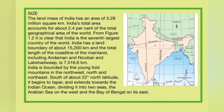South of about 22° North latitude, India begins to taper and extends towards the Indian Ocean, dividing it into two seas — the Arabian Sea on the west and the Bay of Bengal on the east. Looking at the map, the Tropic of Cancer is at 23.5° North, and just below at 22° North, India becomes narrower and extends into the Indian Ocean. This is why India is also called a peninsular country — a landmass surrounded by water bodies on three sides.